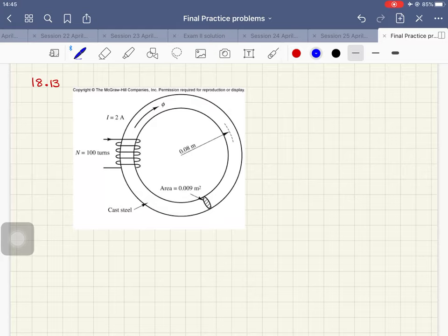Okay, so in this question we have a toroidal magnetic structure and it is asked us to find the magnetic flux phi established in the series magnetic circuit that you can see here.